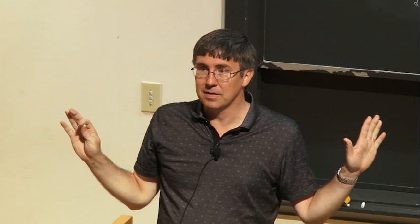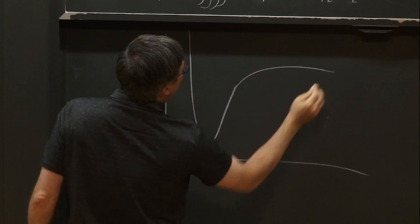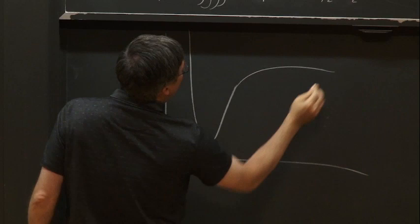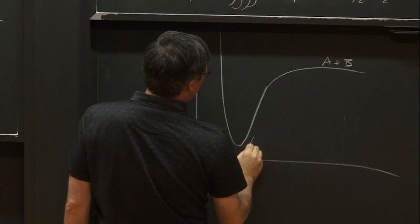Now let's try something a little different: a potential energy surface with no barrier. So here's A plus B coming down to AB with no barrier. How are things different if I did this in the reverse direction? It shouldn't be that different.